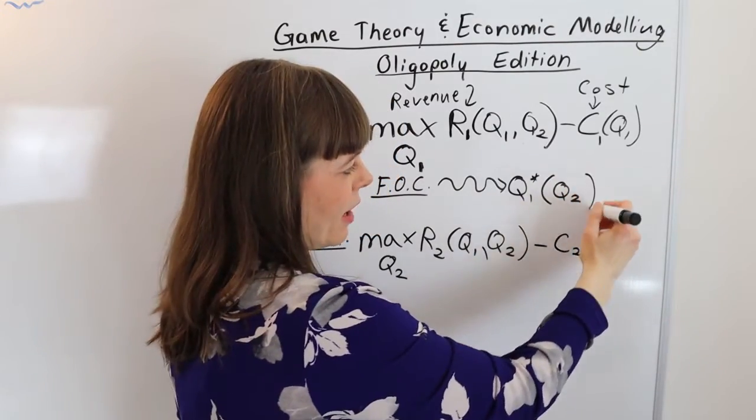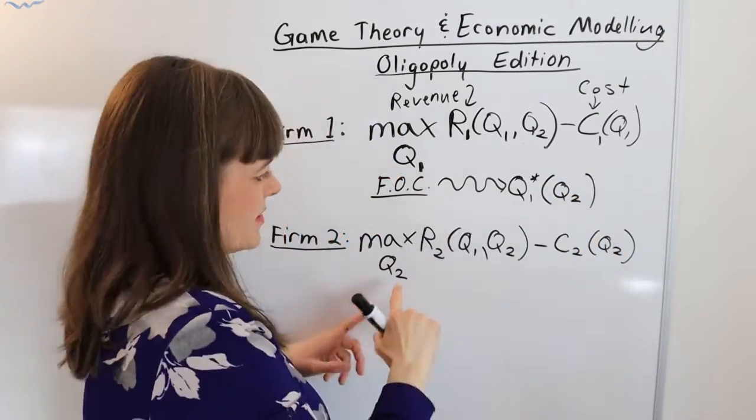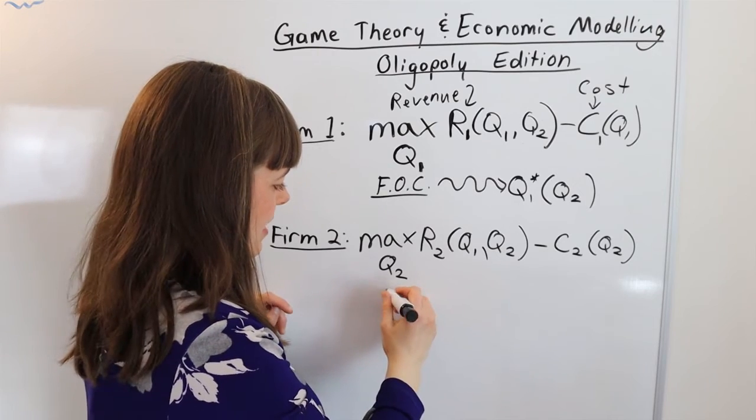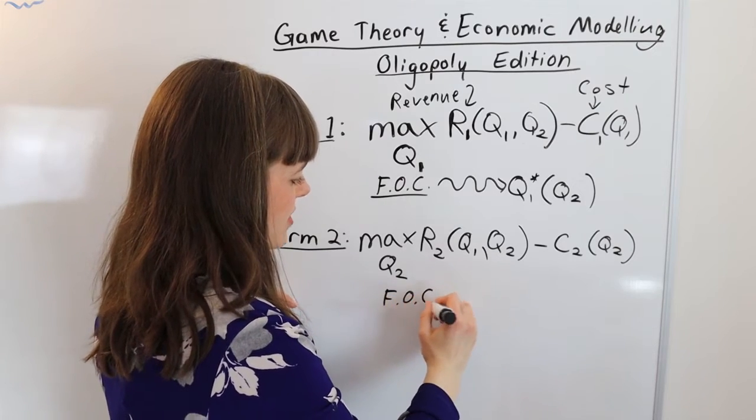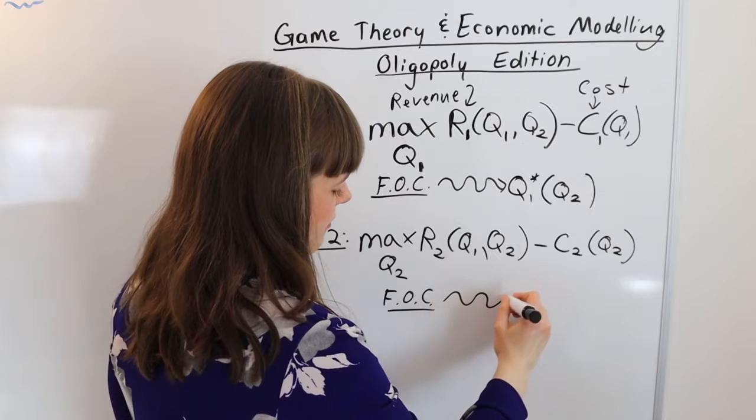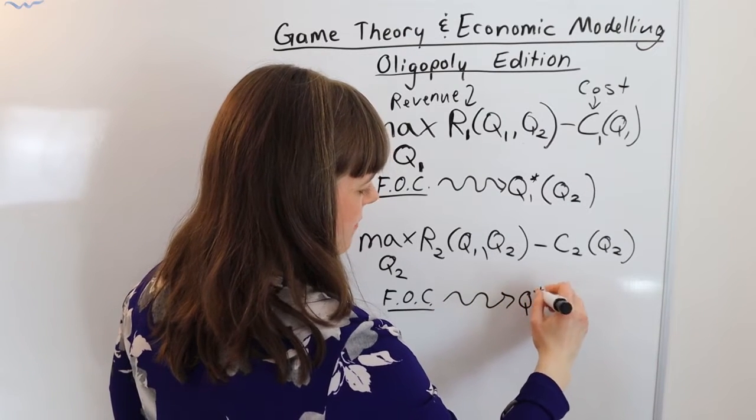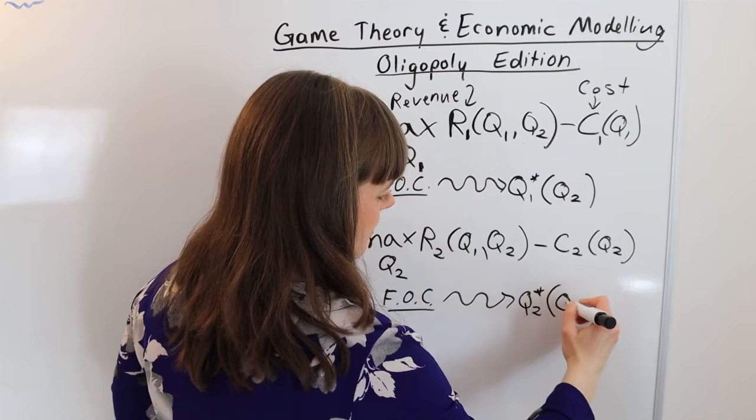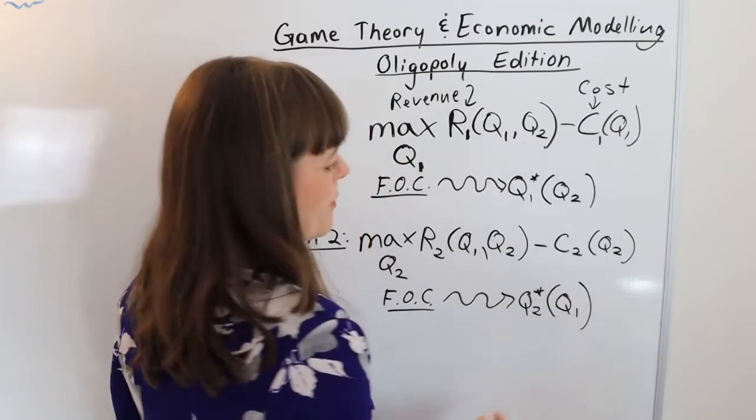Now I'm going to stop there for now but this is not the end of the story. So we come down here we do the same thing down here by taking the first order conditions, solving for optimal choice of quantity for firm two as a function of the quantity that firm one produces.